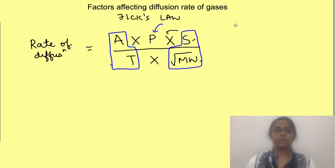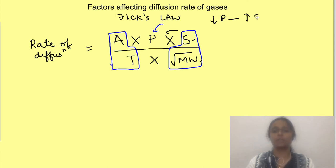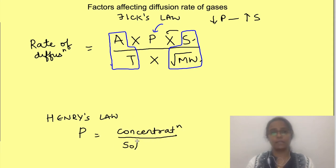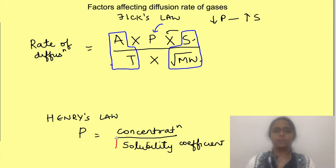Solubility affects the rate of diffusion indirectly by affecting the partial pressure. With the same concentration of two gases, the partial pressure developed is much less for a highly soluble gas compared to a less soluble one. This relationship is given by Henry's law, which states that partial pressure of a gas in a solution equals the concentration of the dissolved gas divided by its solubility coefficient. With these concepts, let us consider two gases critical for survival: oxygen and carbon dioxide.